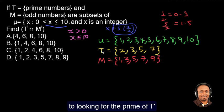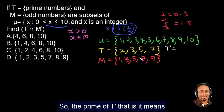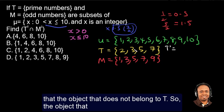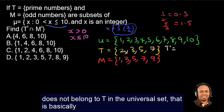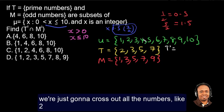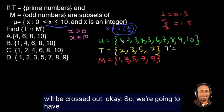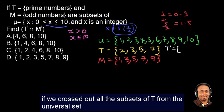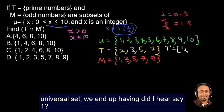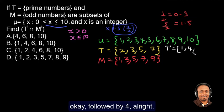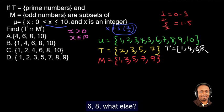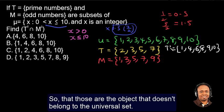So now let's go to looking for the prime of T. So the prime of T, that is, it means the object that does not belong to T. So the object that does not belong to T in the universal set. That is basically, we're just going to cross out all the numbers, like 2 will be crossed out. So we're going to have, if we crossed out all the subset of T from the universal set, we end up having 1, followed by 4, 6, 8, 9, and 10. So that is the object that doesn't belong to the universal set now, that is the prime of T.